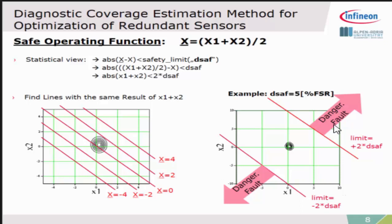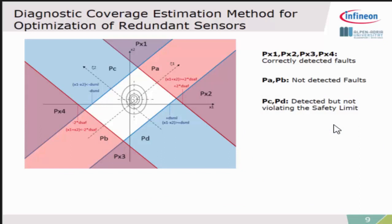What you already realize is that the diagnostic function is not fully covering the safety requirements. We will find this area where, for example, the violet ones, PX1, 2, 3, and 4 are the areas where we are violating the safety requirement but we can detect, so this is safe. On the other hand, we have these red areas, PA and PB, where we are violating the safety requirements but we cannot detect. You also see there are areas PC and PD where we are detecting a fault but we are not violating the safety requirements.